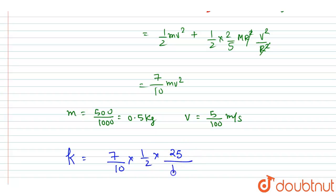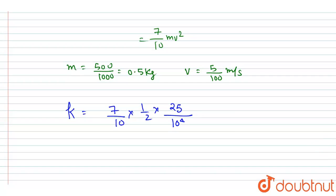So I will write 7 by 10 into m is half into v squared. So v squared will be 25 into 10 to the power minus 4. So this will become 10 to the power minus 4.